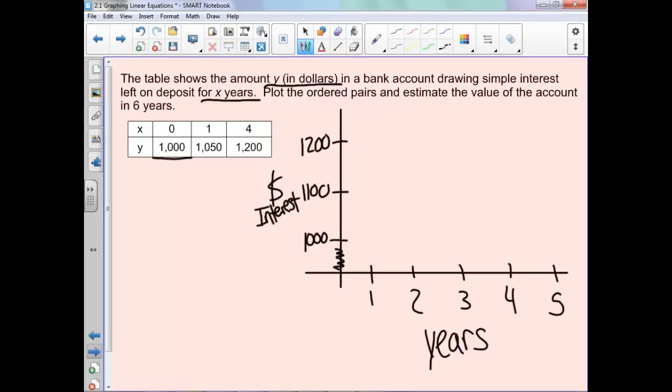Let's go ahead and plot these different points. So it's 0, 1,000, 1, and then 1,050. And then at 4, we're jumping up here. So we want to get a line that goes through. So now we've got our line.